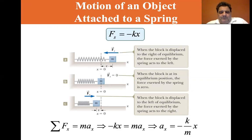So along the x direction, force is equal to mass times acceleration. So minus kx equals mass times acceleration in the x direction. So if we solve for acceleration of x, that's equal to minus k over m times x.